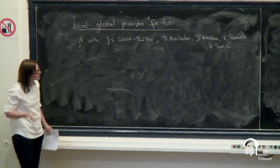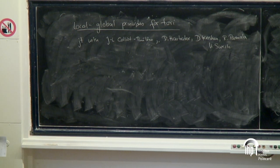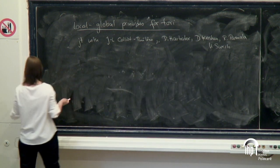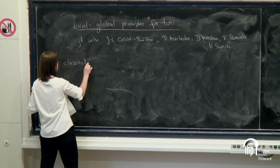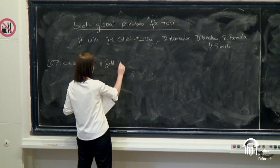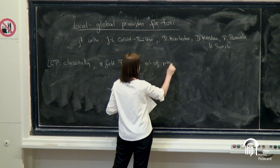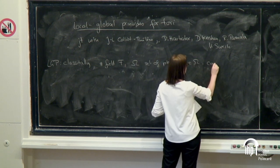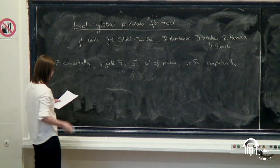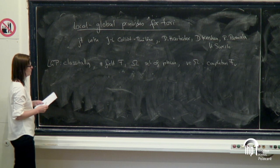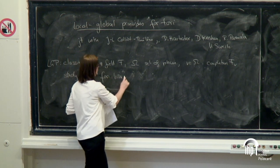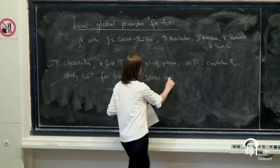I guess I don't have to say why rational points are important, which is good. I probably also don't have to say why local-global principles are important because we've already heard a couple of talks about this. So when we're studying rational points, local-global principles play an important role. Classically, for a number field F and a set of places omega, for each v in omega we have a completion F_v, and we're asking: do we have global points if we have local points everywhere? We already saw that one important case is to study local-global principles for homogeneous spaces under linear algebraic groups.